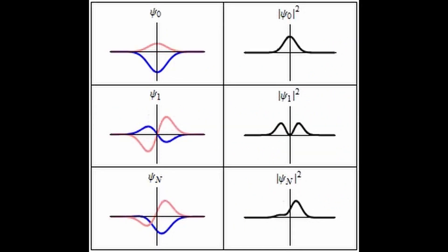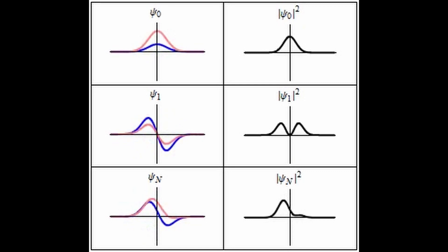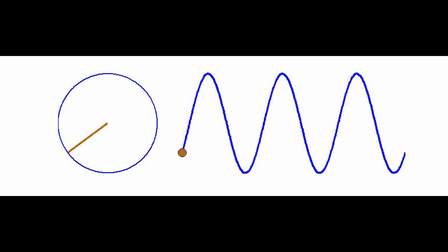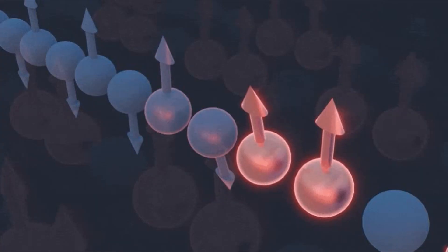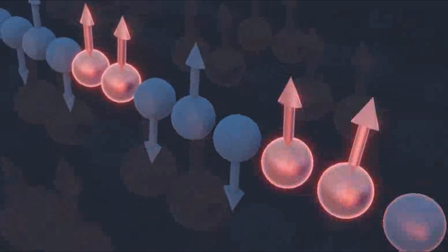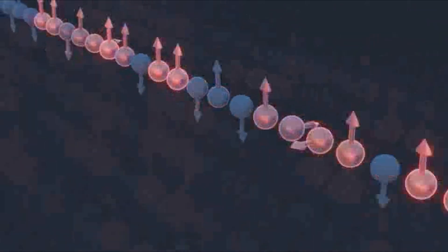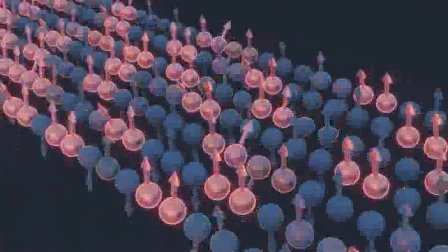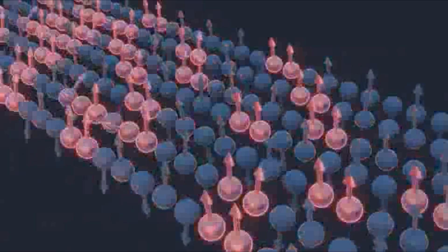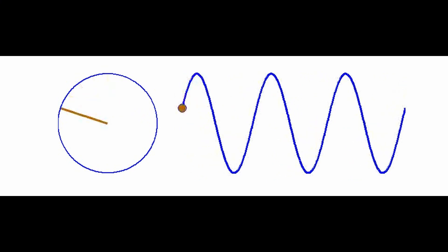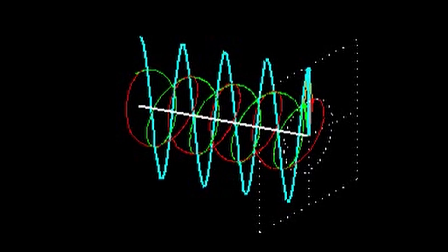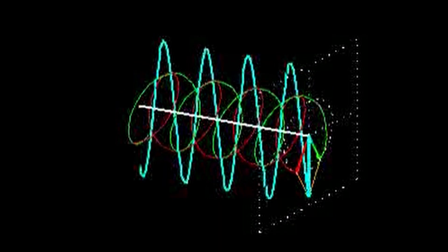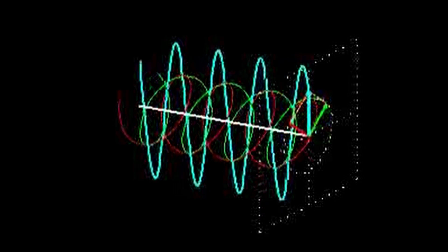Another advance is the discovery of a new type called a complex time crystal, which exhibits a richer variety of symmetry breaking patterns than conventional discrete time crystals. A complex time crystal can have multiple frequencies or phases in its oscillation, as well as higher order harmonics. The researchers proposed a scheme to realize a complex time crystal using trapped ions driven by bichromatic laser fields.